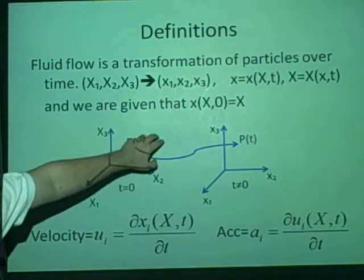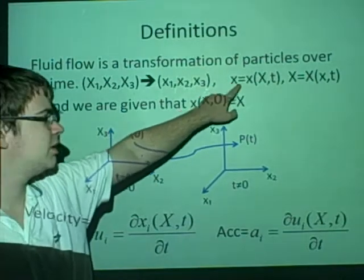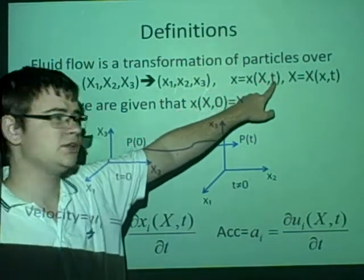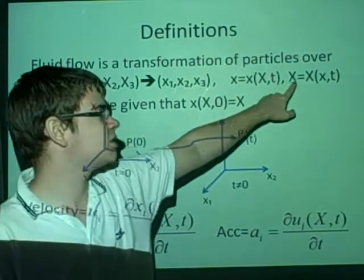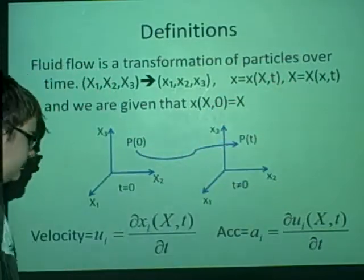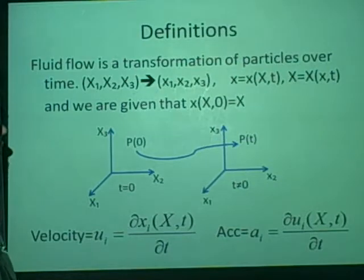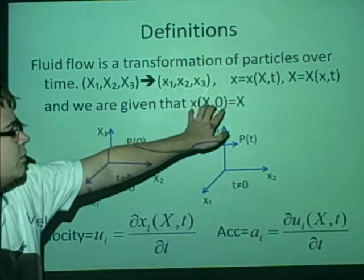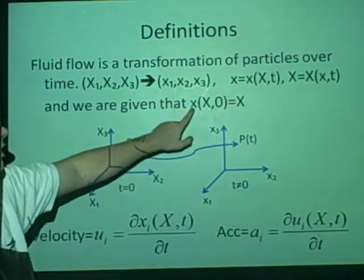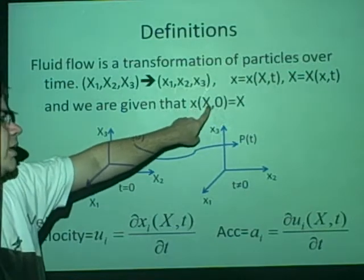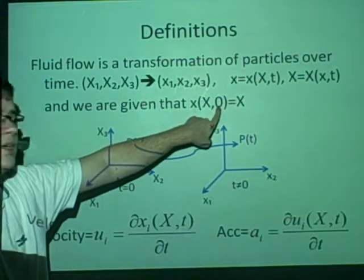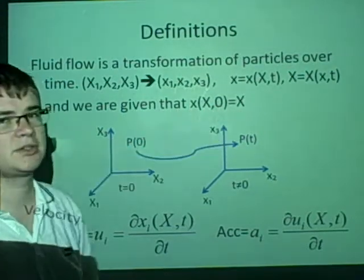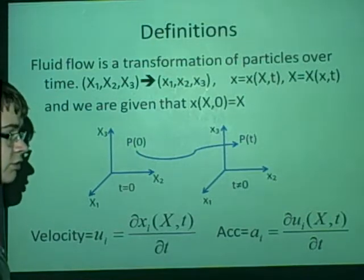A few things to note is that little x can be given in terms of the big X and t, and the big X can be given in terms of the little x and t. And this which we were given for free is that little x at big X and t at zero will give us big X. And that's very useful for solving a lot of things.